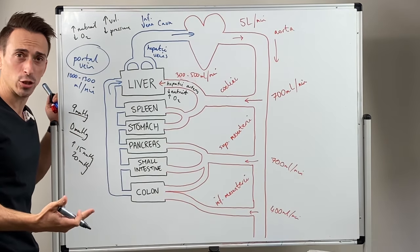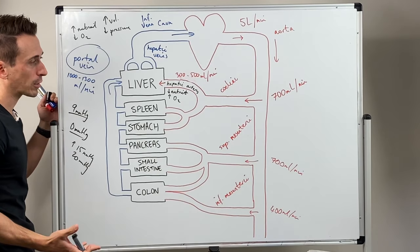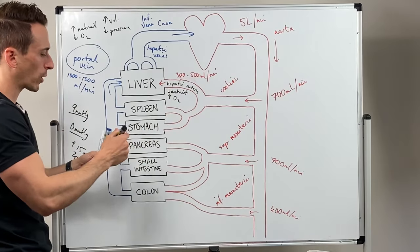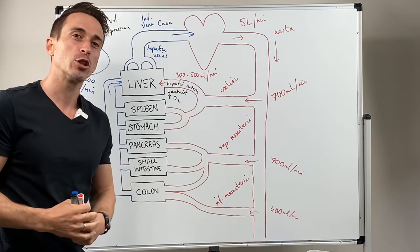And this is what we call portal hypertension, which is a common sign of cirrhosis, which is liver damage. Okay. So what we've got here is a quick run-through of the blood vessels and the circulation of the liver.